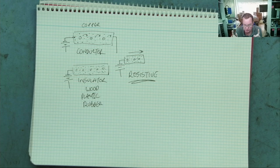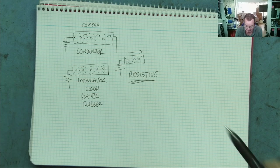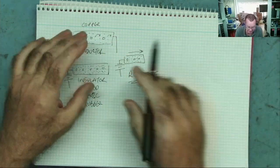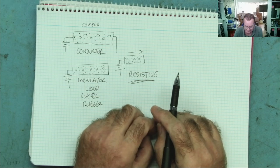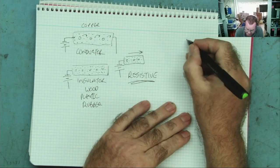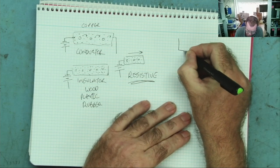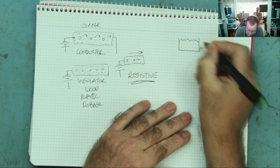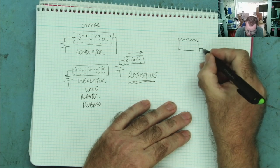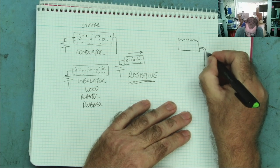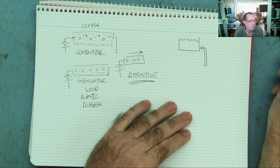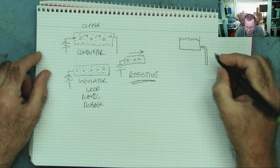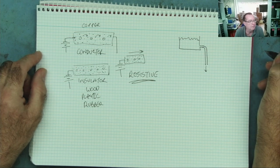I think the easiest way to understand this is with an analogy — one I was taught and have never forgotten. The analogy is to use water and water pipes. If we take a tank full of water with a pipe coming out of it downwards, we all know the water will flow through the pipe and come out.